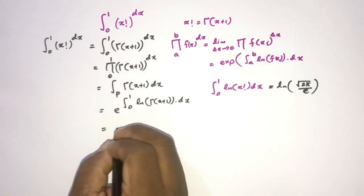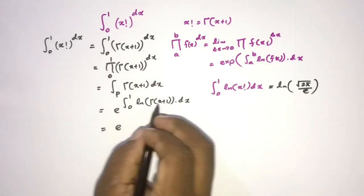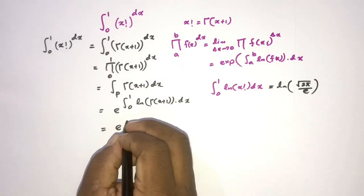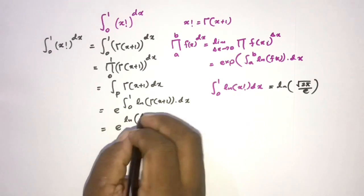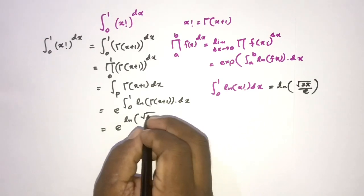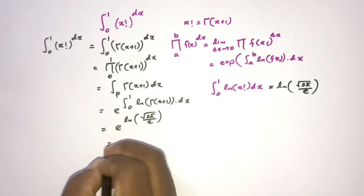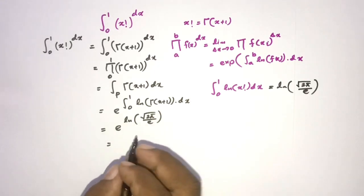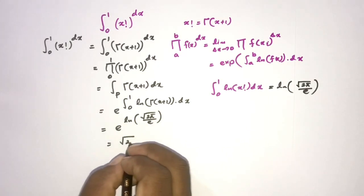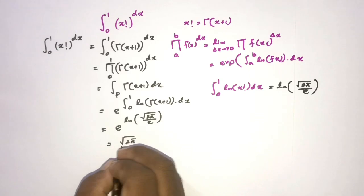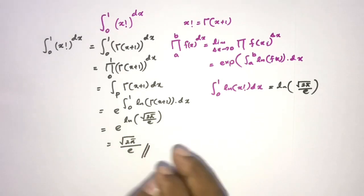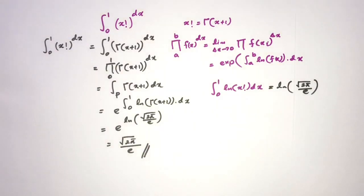So we have e to the natural log of the square root of 2 pi over e. The e and natural log cancel, giving us the final answer: the square root of 2 pi over e. If you like this type of video, please subscribe to this channel. Thank you for watching.